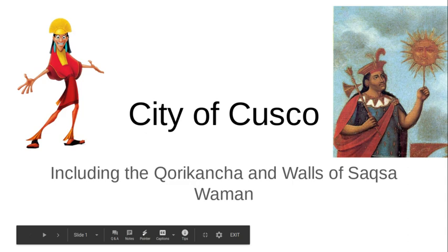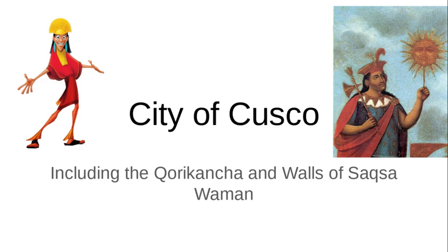Hey everybody. This is back to Indigenous America's art with the city of Cusco. It includes a couple of different pieces: one is a temple called the Coricancha, which will eventually turn into the Church of Santo Domingo, and the walls of Saskawaman. We are in Indigenous America's Unit 5 and going to take a look at this really interestingly laid out city with very interesting history.